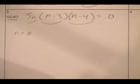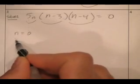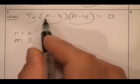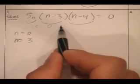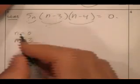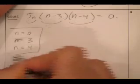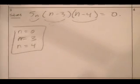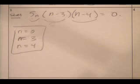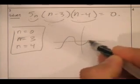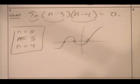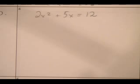What would make the second factor zero? What minus three equals zero? How about three — three minus three equals zero. This gives fifteen times zero times negative one equals zero. And the third factor gives n equals four. So the three solutions are n equals zero, three, and four. These are called the zeros, or roots, of the equation — the places where the graph crosses the x-axis. The graph would cross at zero, three, and four.